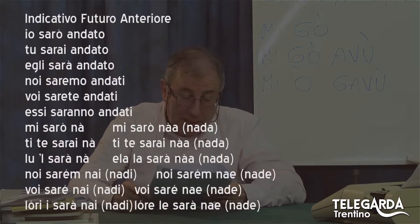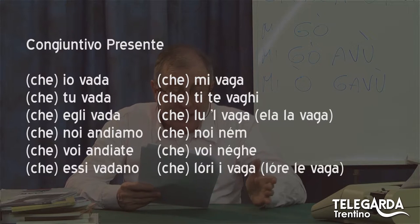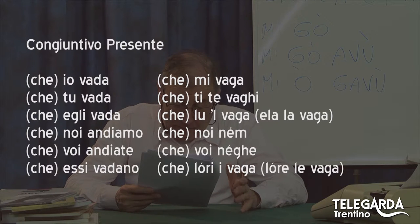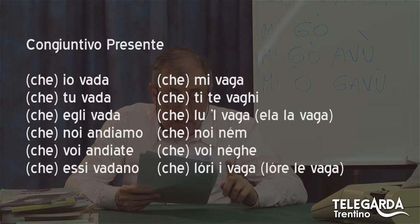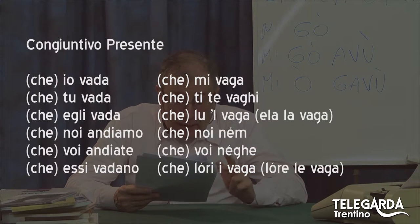Sembra uno scioglilingua. Bene, finito l'indicativo, andiamo al congiuntivo. Che io vada, che tu vada, che li vada, che noi andiamo, che voi andiate, che si vadano. In dialetto diventa: che mi vaga, che ti te vaghi, che lul vaga, che noi nem, che voi neghe, che lori i vaga. Terza persona singolare e plurale femminile: che ela la vaga, che lore le vaga. E questo è il congiuntivo presente.